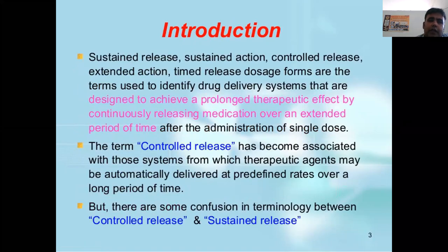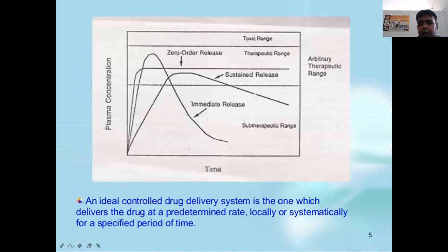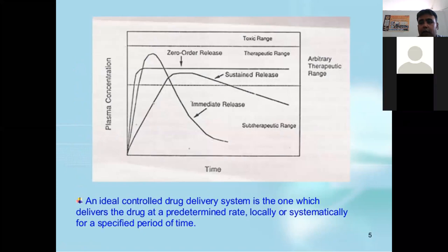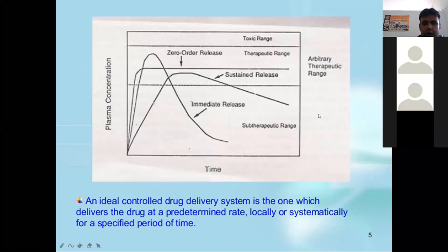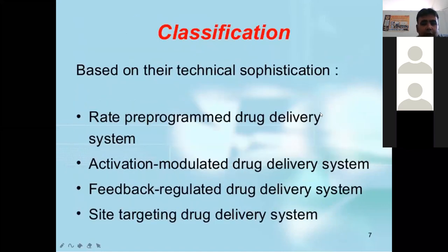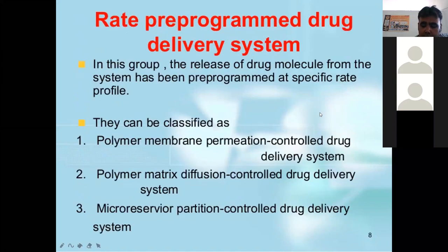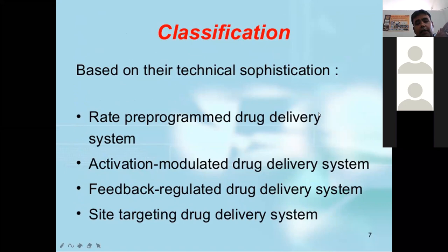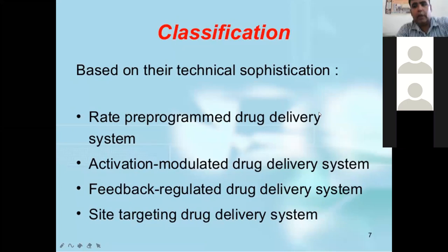We studied about the definition, what is controlled release, and the difference between the two. Then advantages and disadvantages, and classification. The controlled drug delivery system has been classified on the basis of technical sophistication: pre-programmed drug delivery system, activation-modulated drug delivery system, feedback-regulated drug delivery system, and site-targeting drug delivery system.